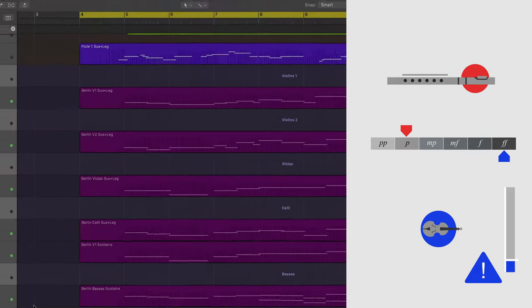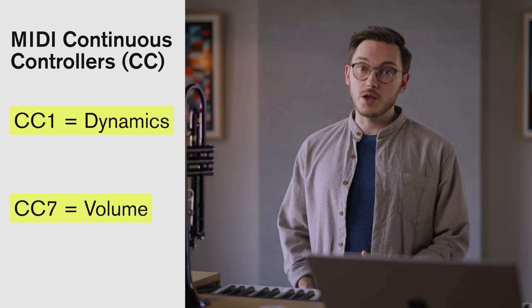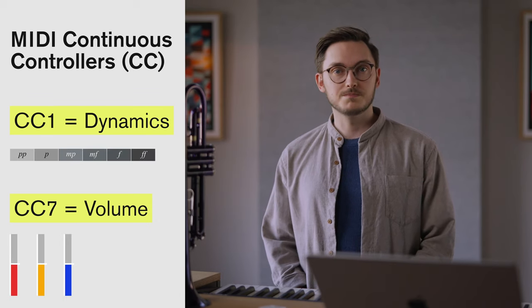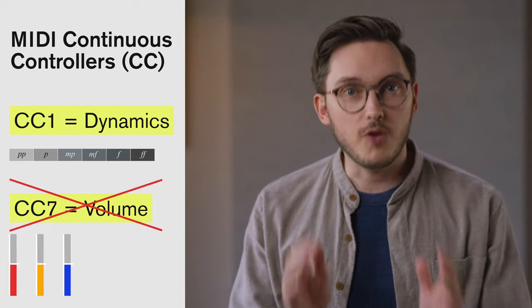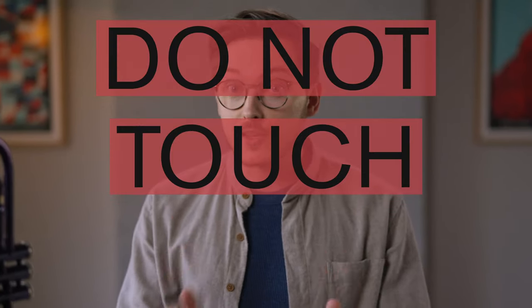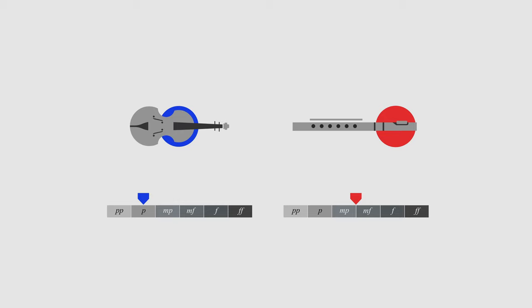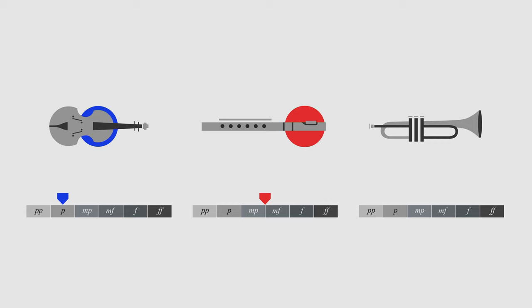So to program dynamics, we can use MIDI continuous controllers, otherwise known as CCs. The ones that are important are CC1 for dynamics and CC7 for volume. But do not mess with the volume. Do not touch CC7. The volumes are already perfectly adjusted to what a real orchestra would sound like. The balance here is in our samples and in the way that they've been recorded and mixed.